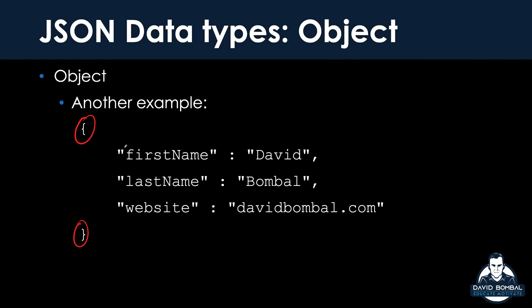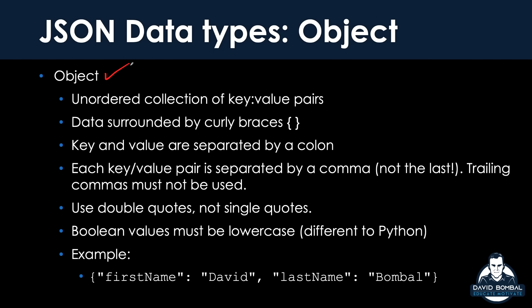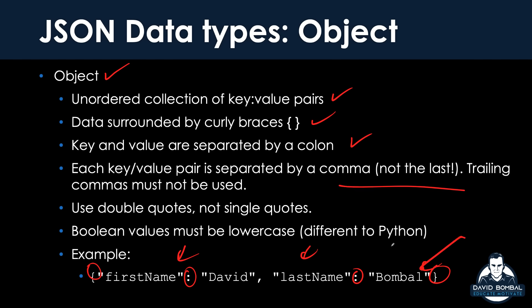It's easier to read in this format. Spaces are not important with JSON. Notice the curly braces: first key, first value; second key, second value — separated by a comma; third key, third value — no comma. If you put a comma after the last entry, that would be a problem. To summarize: a JSON object is an unordered collection of key-value pairs — the order doesn't matter. Surrounded by curly braces. Key and value pairs are separated by a colon. Spaces don't matter. The last entry must not have a comma. Use double quotes, not single quotes.